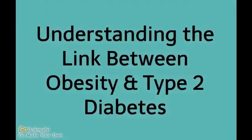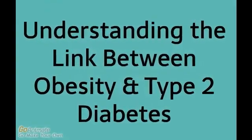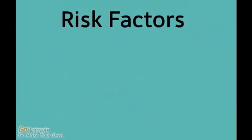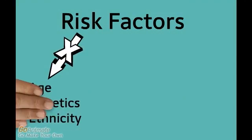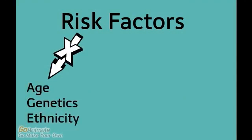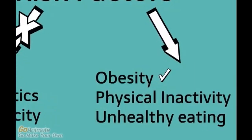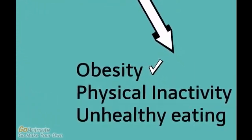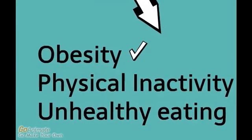In this video we'll take a closer look at the link between obesity and type 2 diabetes. Risk factors for type 2 diabetes can be grouped into two categories: non-modifiable factors which include age, genetics and ethnicity, and modifiable factors such as obesity, a lack of physical activity and unhealthy eating. Because obesity is cited as the most important risk factor in developing type 2 diabetes, we'll be focusing on how obesity can lead to the development of this disease.